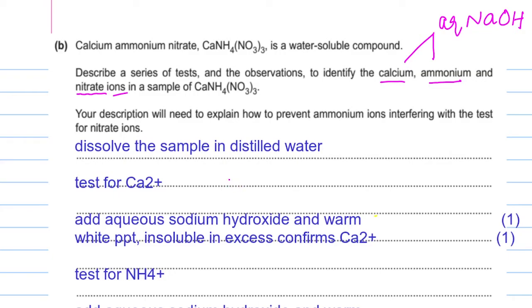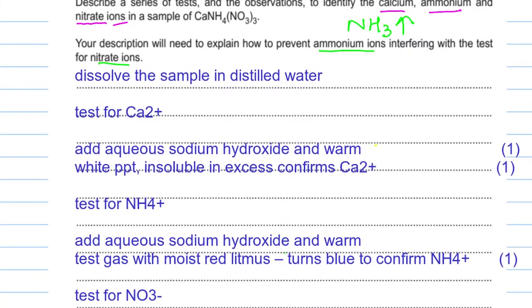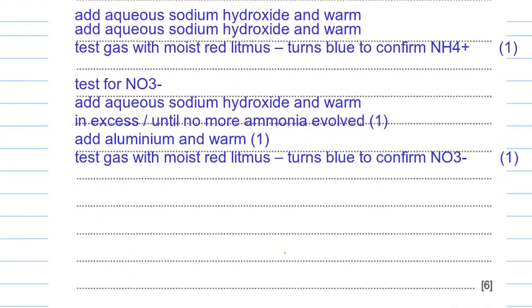Your description will need to explain how to prevent ammonium ions from interfering with the test for nitrate ions. This is asked because for both ammonium ions and nitrate ions, ammonia gas is given off, which turns moist red litmus paper blue. So we need to distinguish between these two ions. This question is worth six marks.